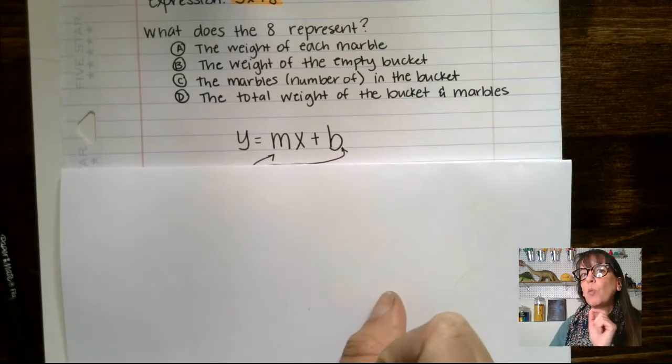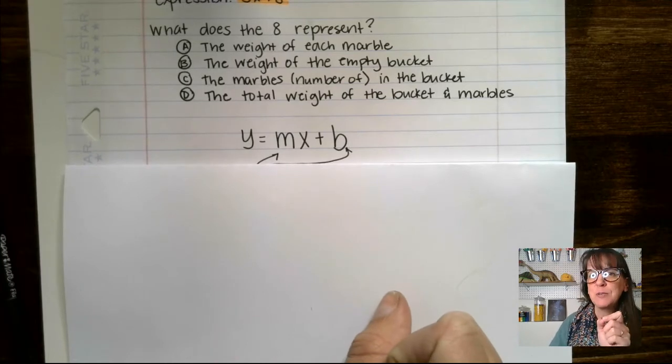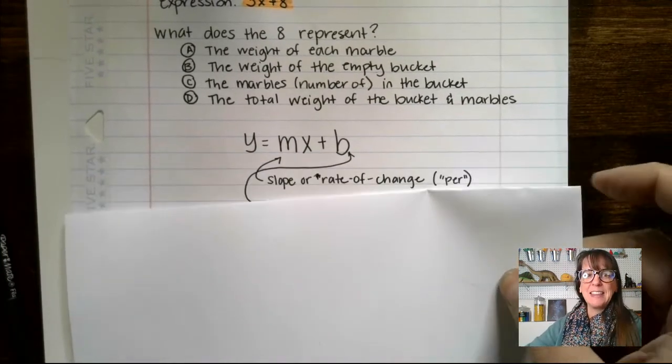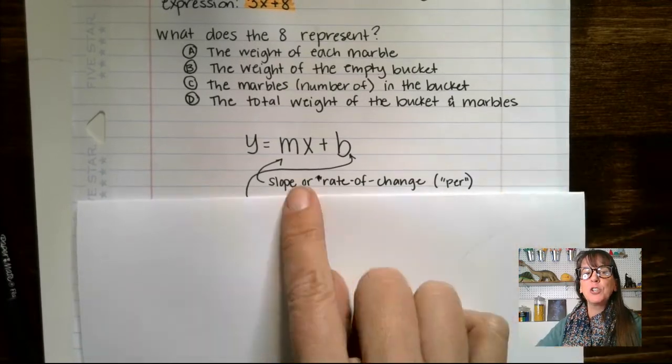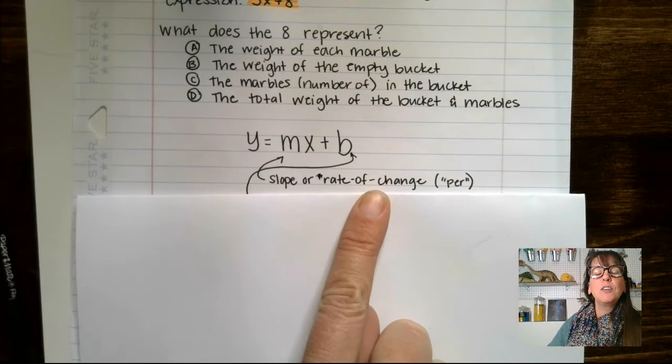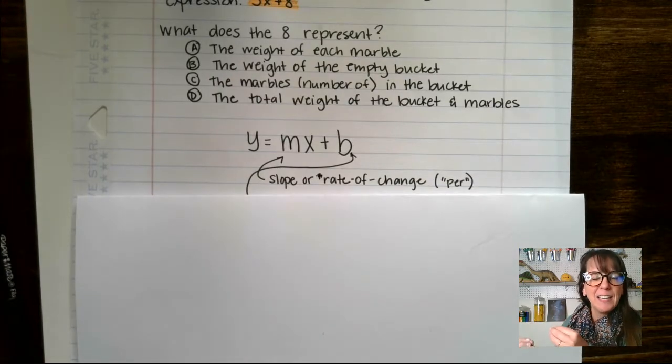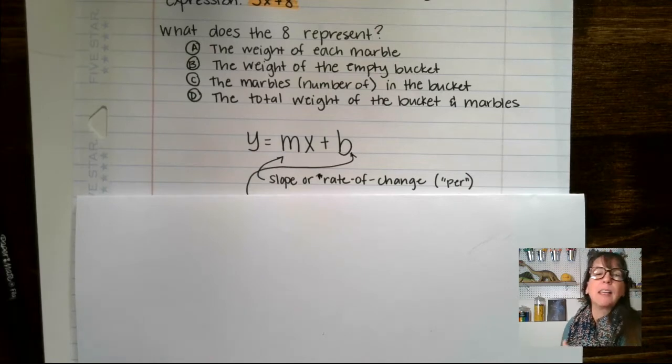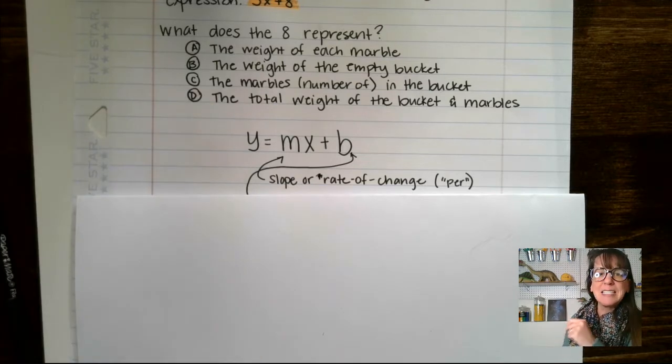But when we're talking about word problems, we can actually use this information to our advantage. The m is our slope or our rate of change. When you hear the word rate, you want to think per, something per something else, like 65 miles per hour. That would be a rate. So we're going to consider that word per when we go back and read this.